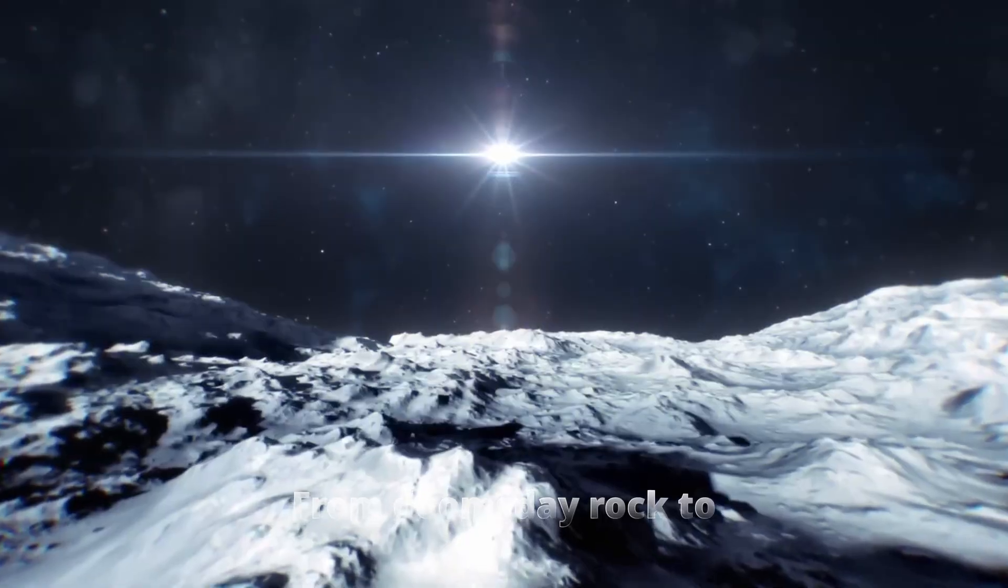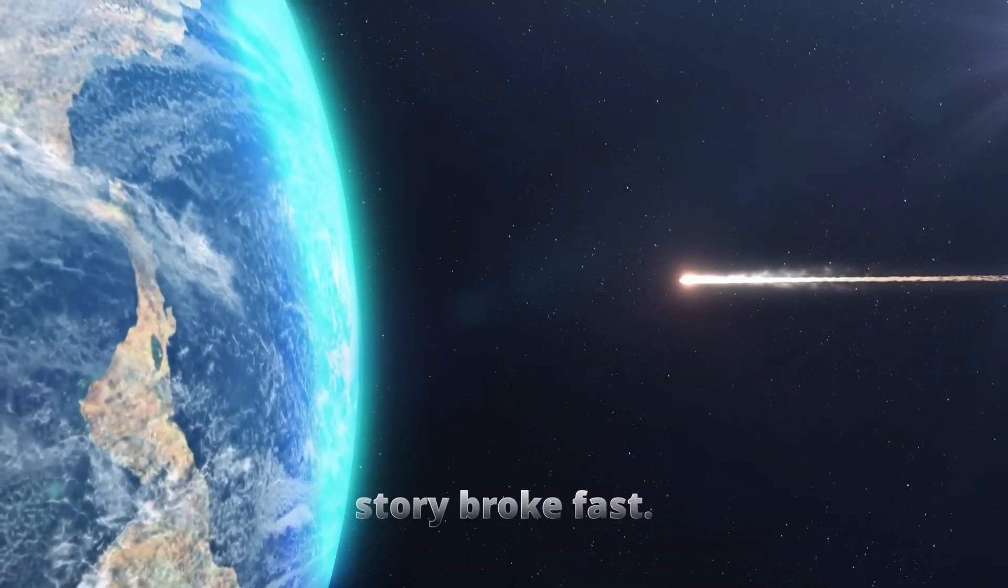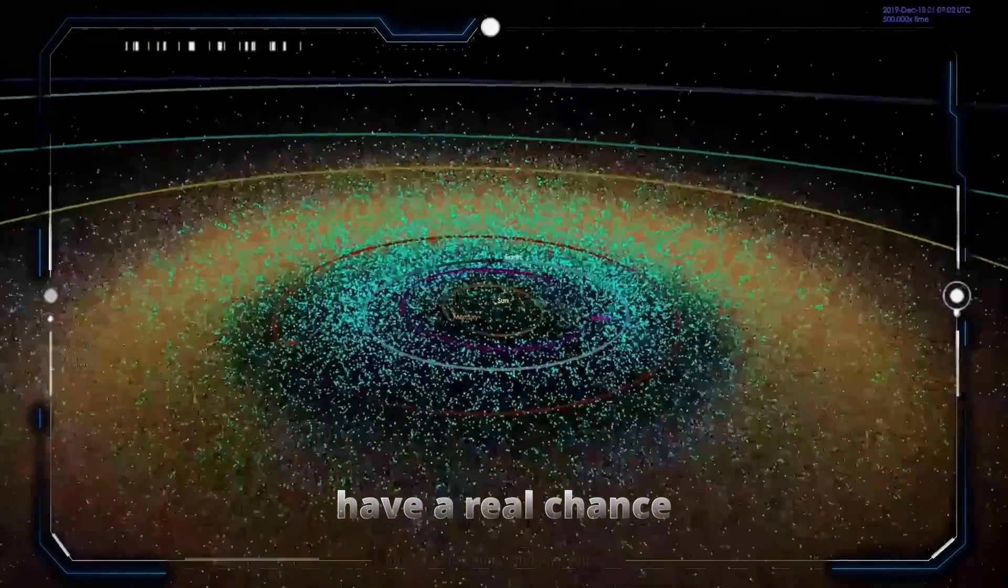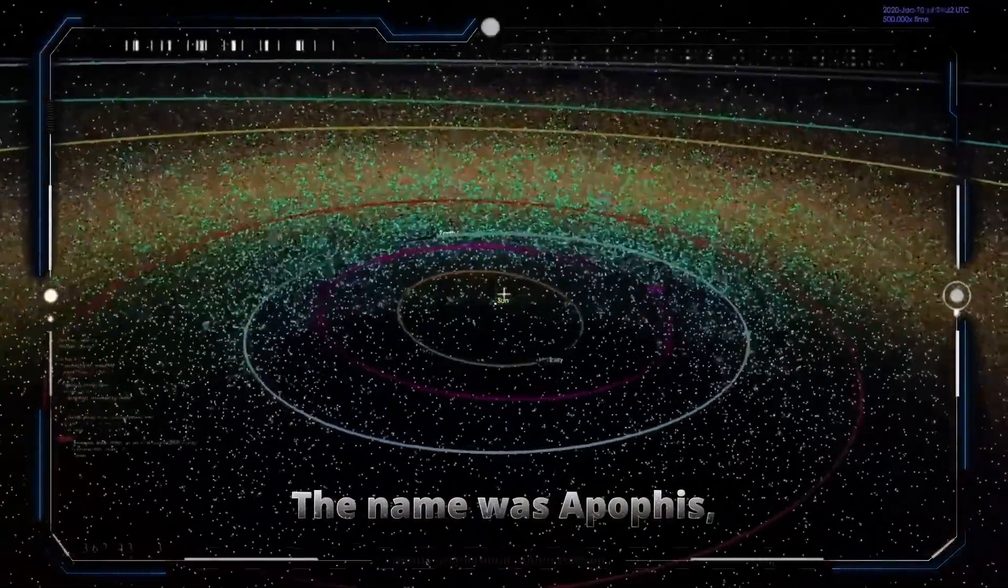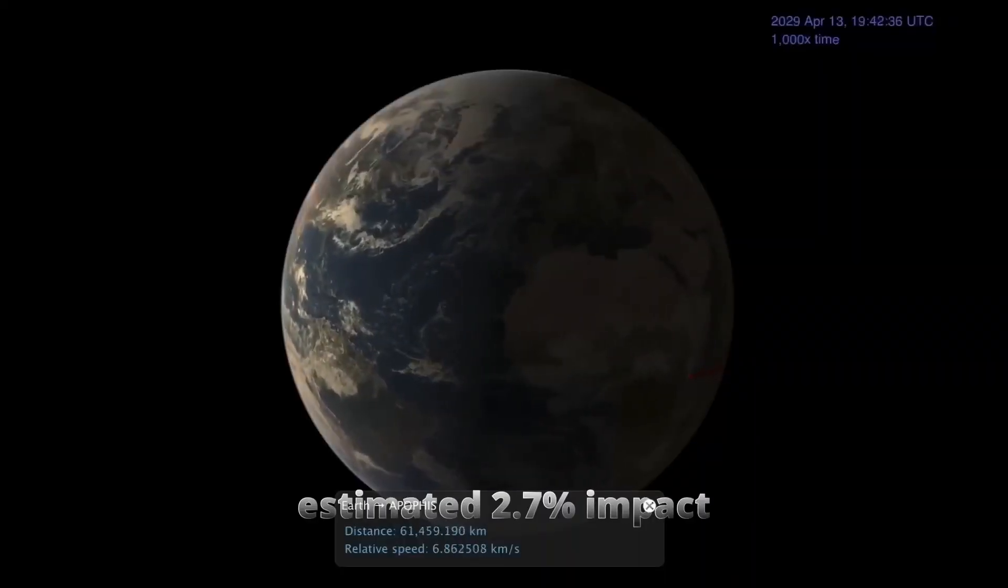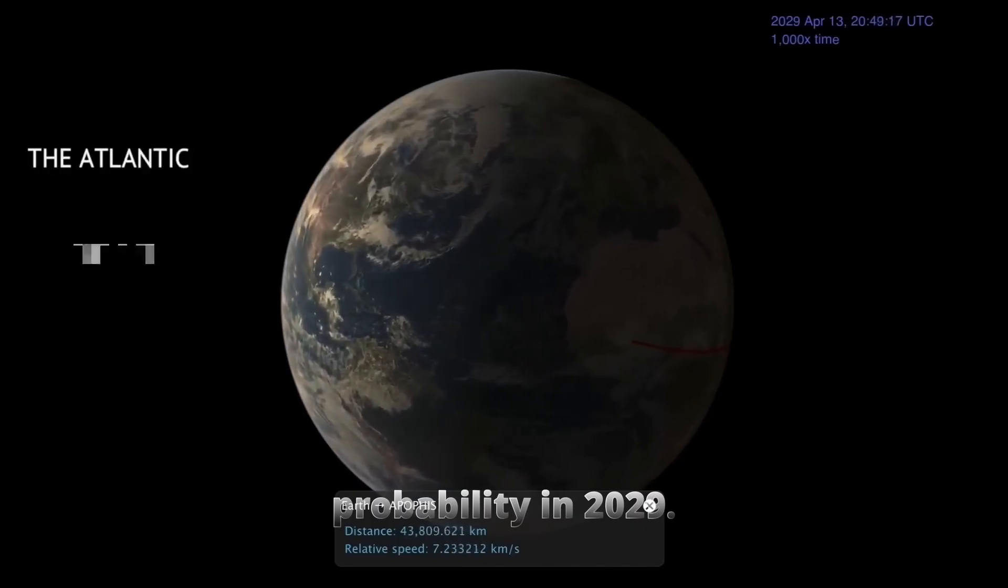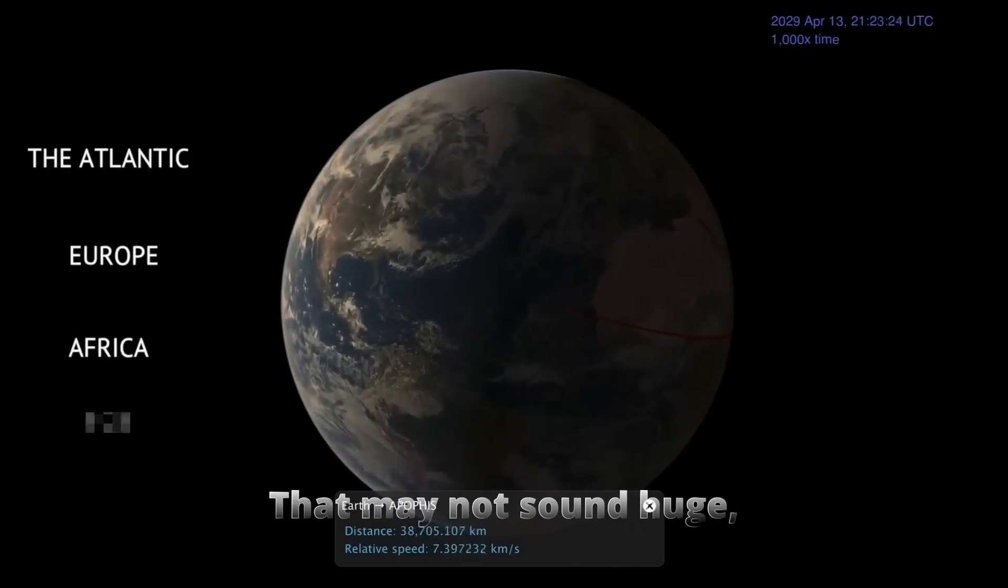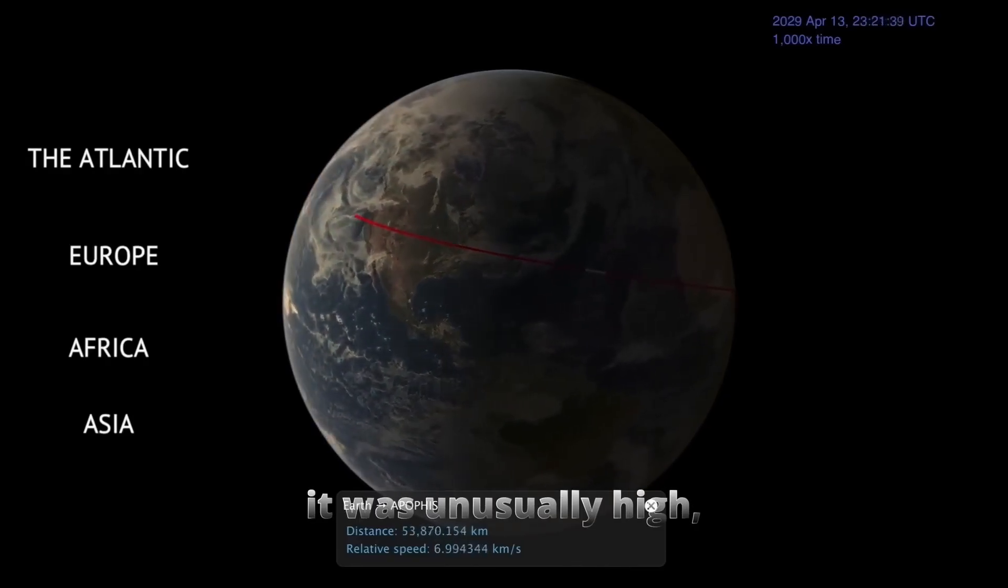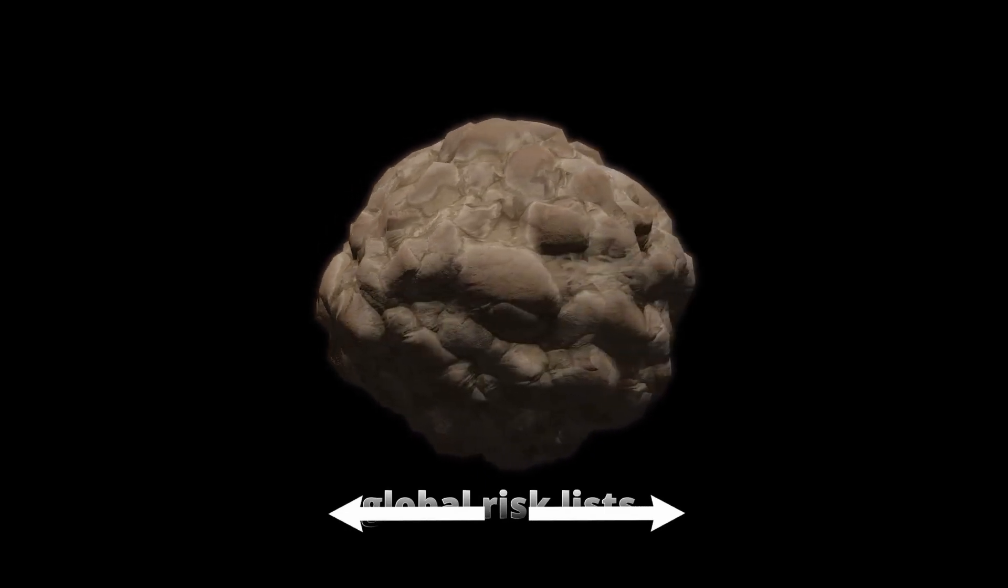From doomsday rock to scientific jackpot. Back in 2004, the story broke fast. A newly found asteroid appeared to have a real chance of hitting Earth. The name was Apophis, and the early computer models gave it an estimated 2.7% impact probability in 2029. That may not sound huge, but in asteroid terms it was unusually high, and it pushed Apophis right to the top of global risk lists.